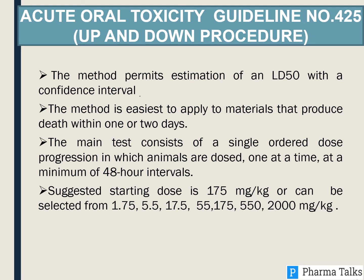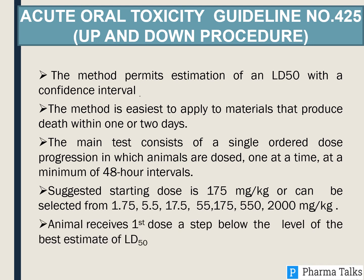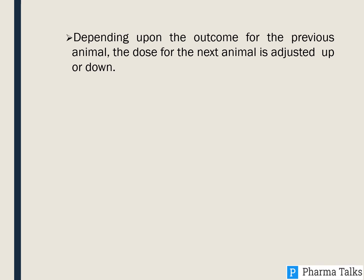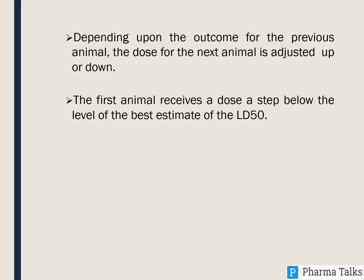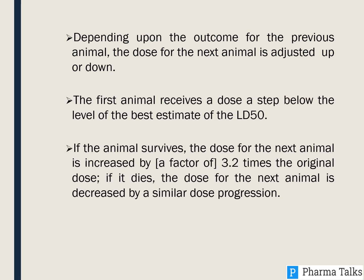The suggested starting dose is 175 mg/kg, or can be selected from the series: 1.75, 5.5, 17.5, 55, 175, 550, or 2000 mg/kg. The first animal receives a dose one step below the best estimate of the LD50. Depending on the outcome for the previous animal, the dose for the next animal is adjusted up or down. If the animal survives, the dose for the next animal is increased by 3.2 times the original dose. If it dies, the dose for the next animal is decreased by a similar dose progression.